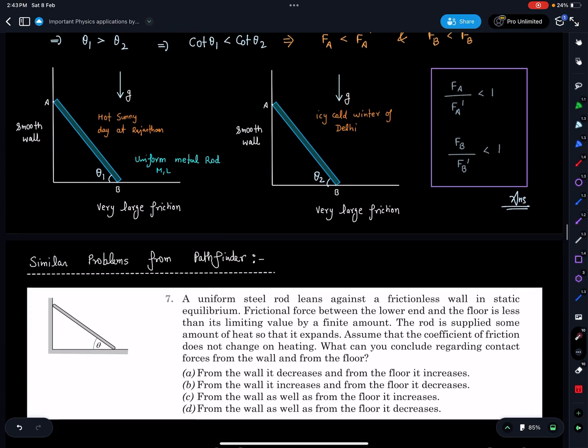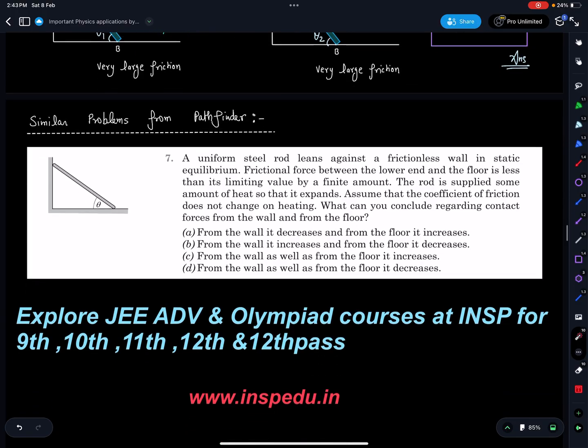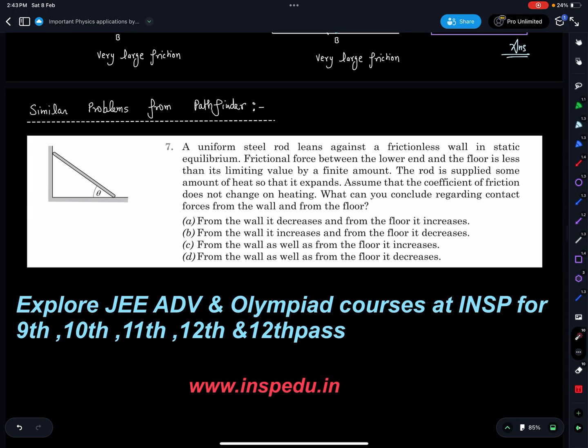Problem here, so you can try it. Similar problem from Pathfinder, basically this problem only, I have modified the way I'm asking this question, it's different but it is virtually the same problem. So from the wall it decreases, from the floor it increases, from the wall increases, from the floor decreases, from the wall as well as from the floor. So you can check which is going to be the correct answer in this particular case.